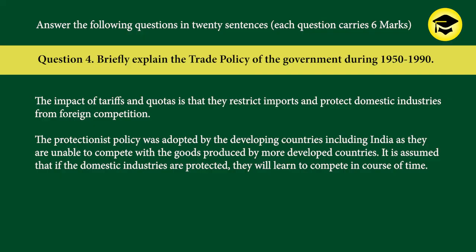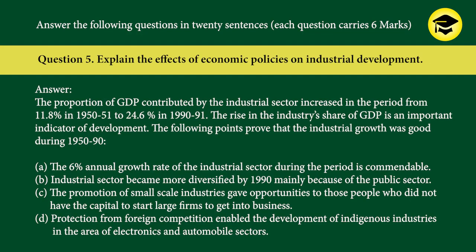The protectionist policy was adopted by developing countries including India as they were unable to compete with goods produced by more developed countries. It was assumed that if domestic industries are protected, they will learn to compete in the course of time. Question 5: Explain the effects of economic policies on industrial development. The proportion of GDP contributed by the industrial sector increased from 11.8 percent in 1950–51 to 24.6 percent in 1990–91. This rise in industry's share of GDP is an important indicator of development.